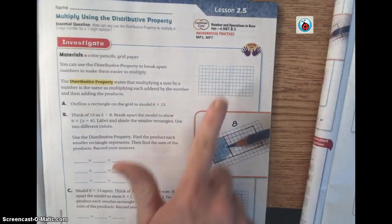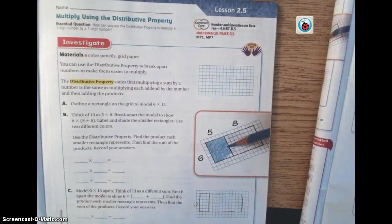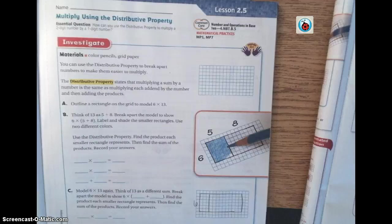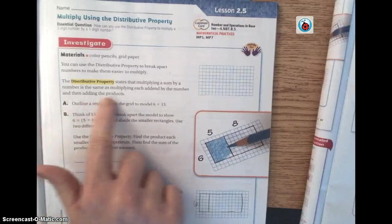We are actually just going to use this grid paper provided right here and your pencil to shade. The distributive property states that multiplying a sum by a number is the same as multiplying each addend by the number and then adding the products.